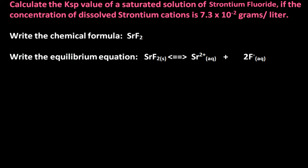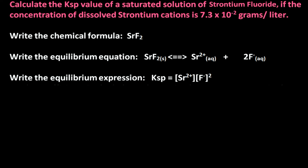The equilibrium equation is written as follows: solid strontium fluoride will reach equilibrium in aqueous solution with strontium 2+ cations plus 2 moles of fluoride anion. From the equilibrium equation, a KSP expression may be written where KSP represents an equilibrium expression. The KSP expression for this ionization will be KSP equals the concentration of strontium 2+ cation times the square of the concentration of the fluoride anion.